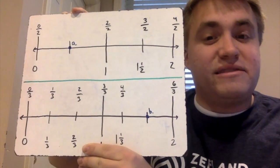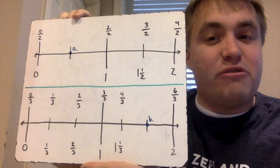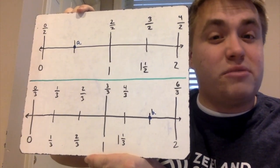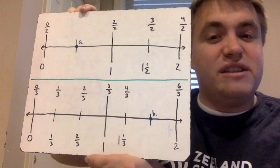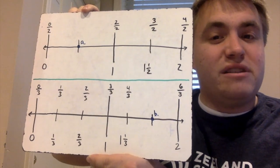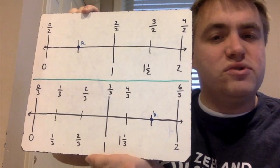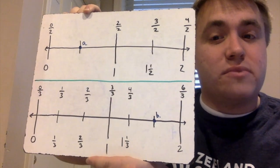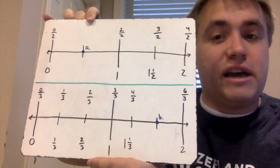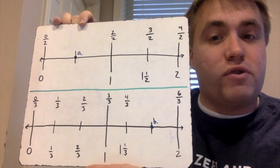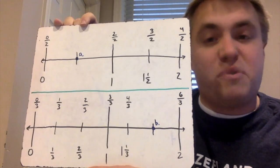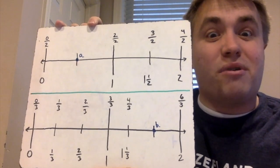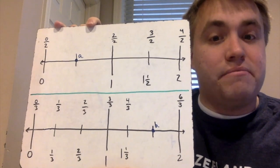Moving on to my next number line down here — this one also goes up to two, but it is broken down not in halves, but into thirds. So starting over here, I have zero-over-three, moving over to one-over-three, two-over-three, three-over-three, four-over-three, missing number, and then six-over-three.